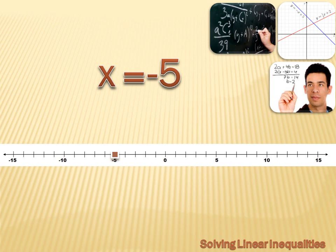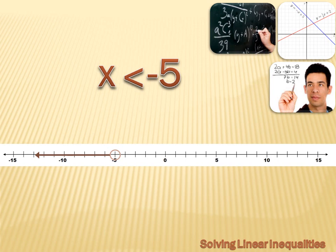You know how to use a number line to graph a number. For the equation x equals minus 5, we put a dot on minus 5. But if the expression is x is less than minus 5, we draw an open circle around minus 5 — we don't fill it in because minus 5 is not included — and then draw an arrow to the left towards the smaller numbers.